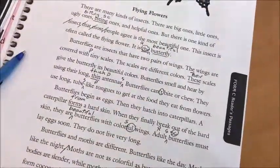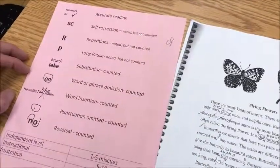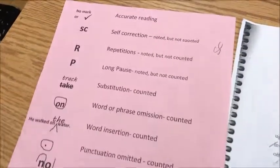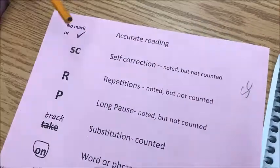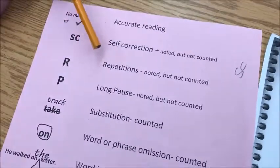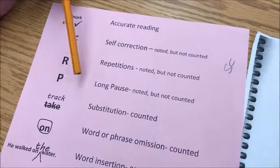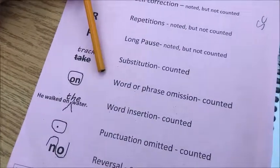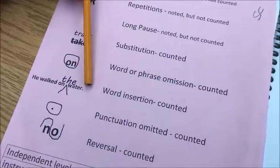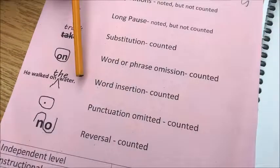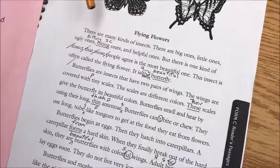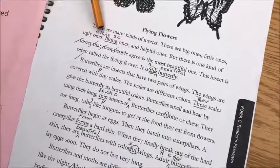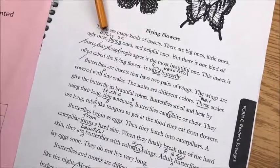Before we begin to total up the miscues, we're going to make sure we're not counting errors that should not be counted in the final total. Looking at our cheat sheet: self-corrections are noted but not counted. Repetitions are noted but not counted. Long pauses are noted but not counted. The ones we are counting are: substituting one word for another, omitting a word, phrase, or punctuation, inserting words that are not there, and any reversals. We're only counting the miscues in the hundred words — the first paragraph is the warm-up.